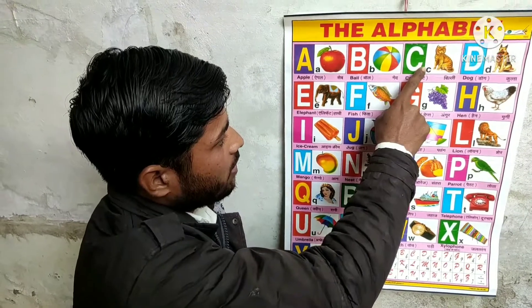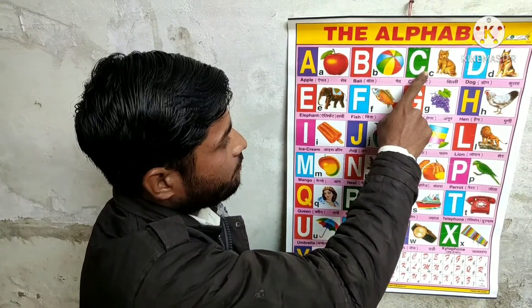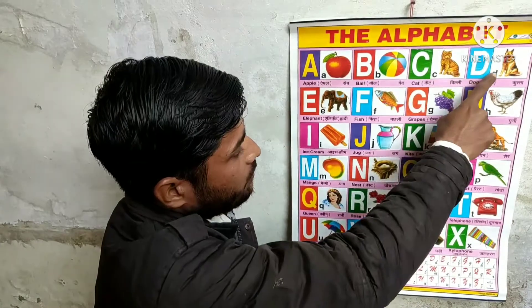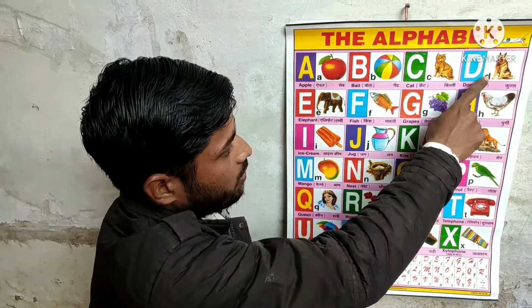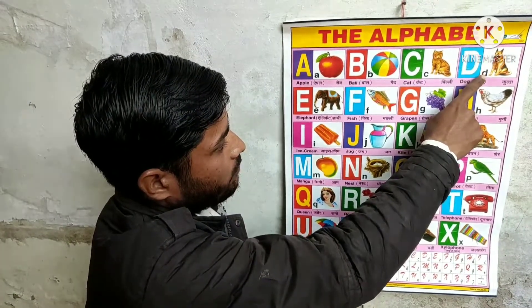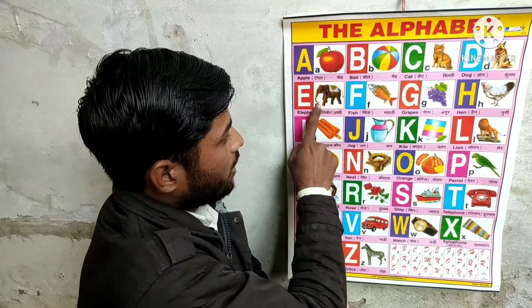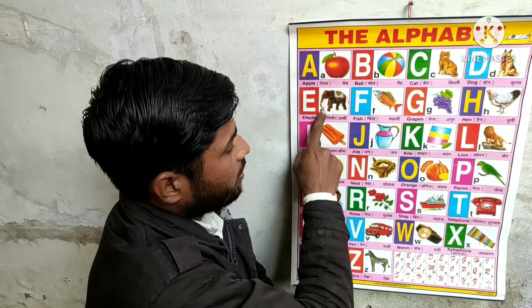C for kite, kite means billy. D for dog, dog means kutta. E for elephant, elephant means harki.